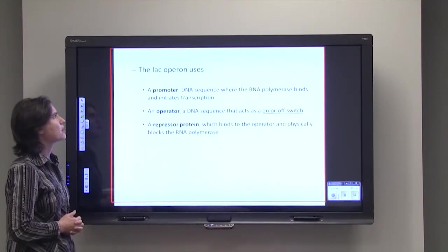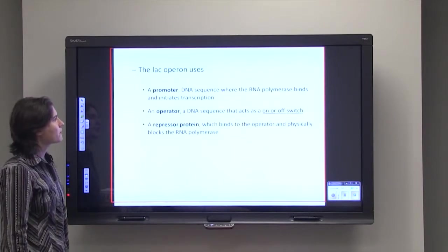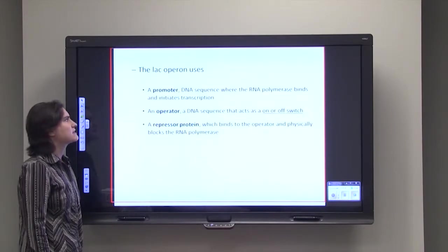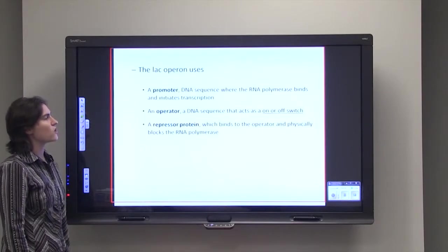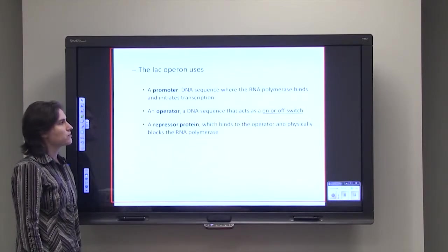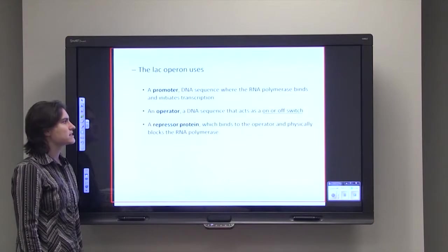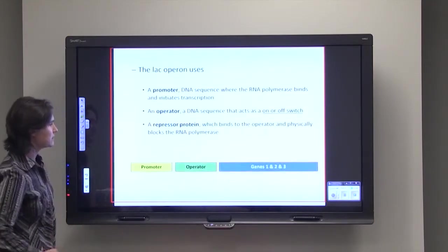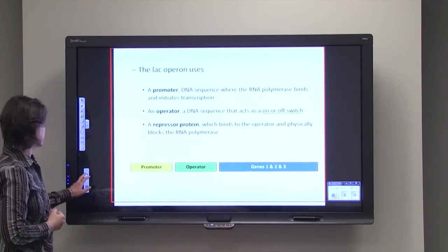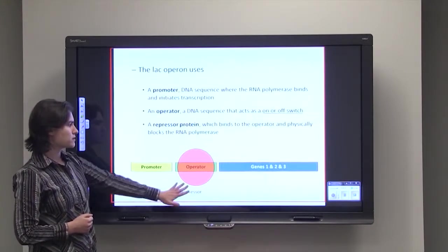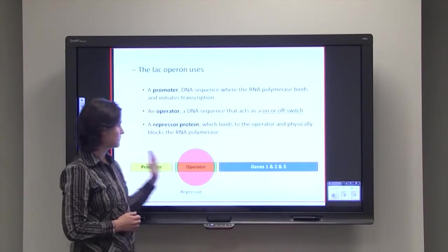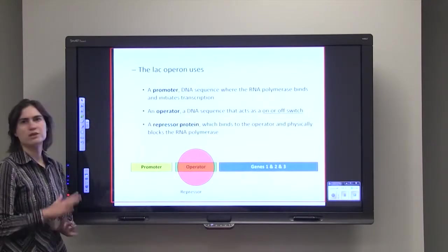Now the lac operon involves three parts: a promoter, an operator, and a repressor protein. A promoter is simply a DNA sequence where the RNA polymerase binds and initiates transcription. An operator is also a DNA sequence, but this operator acts as an on or off switch. And then we have a repressor protein which binds to the operator and physically blocks the RNA polymerase. So down here we've got the promoter, we've got the operator, and we've got genes maybe one, two, and three. And then we have a repressor protein. If the repressor protein binds, it blocks the ability of the RNA polymerase to do transcription, so it's physically blocked. And so genes one, two, and three are off.